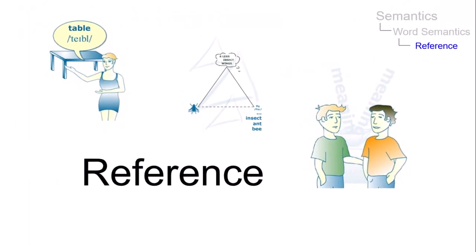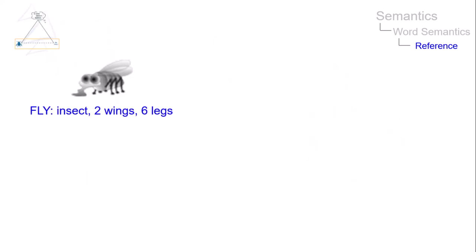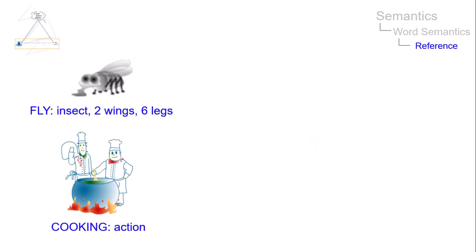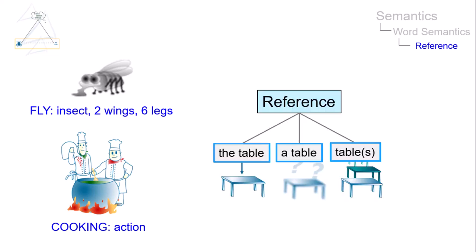Reference is concerned with designating things, activities, properties, relationships, etc., in the outside world by linguistic means. The following types of reference can be distinguished: definite, indefinite, and generic reference.